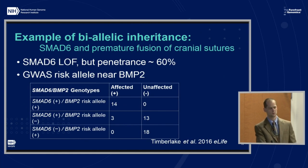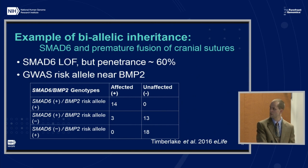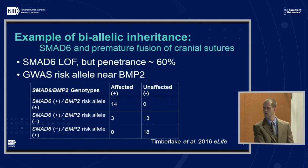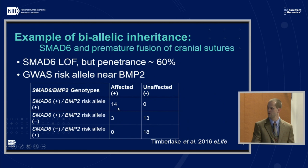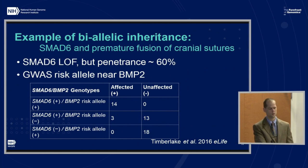Not every discovery is a simple gene that can be knocked out in a straightforward manner. For example, in biallelic inheritance of SMAD-6 in craniosynostosis from the Yale Center, they found a loss of function in SMAD-6 strongly associated with phenotype — but the penetrance was only about 60 percent, which would exclude it in a number of analysis pipelines. However, looking at GWAS data collected previously, they saw a risk allele near BMP2. When combining the two, they got full penetrance in subjects who had the null mutations in SMAD-6 and the risk allele near BMP2.